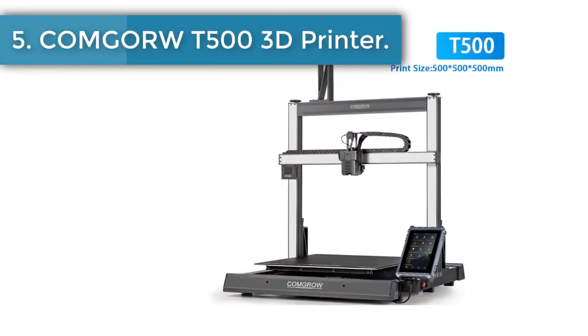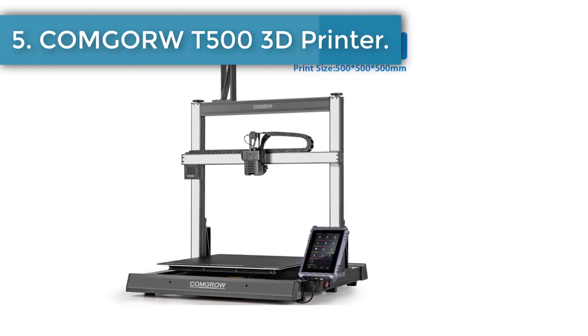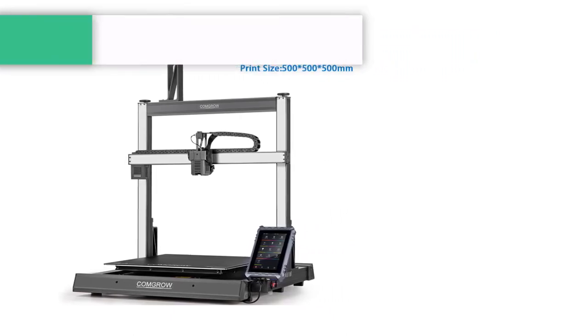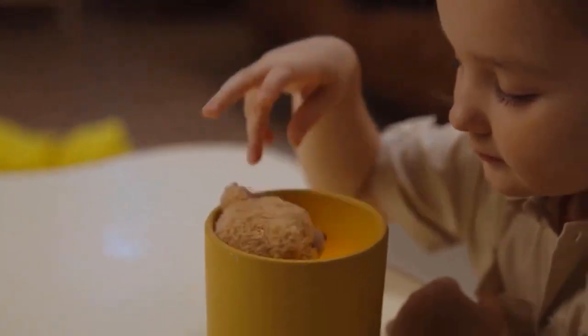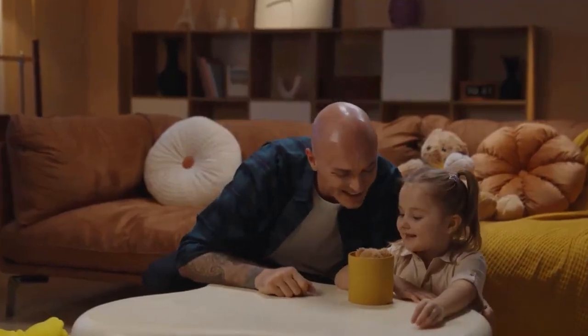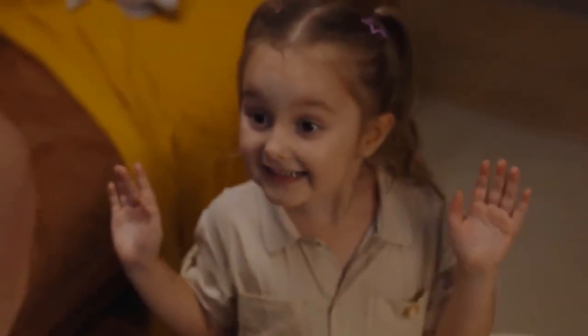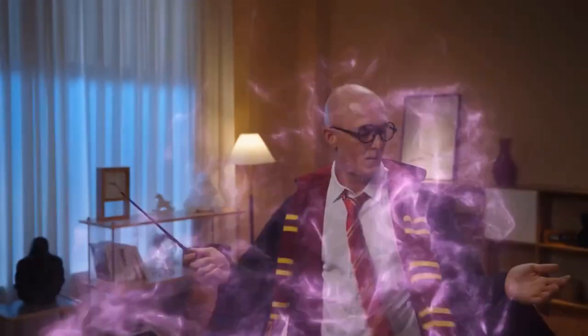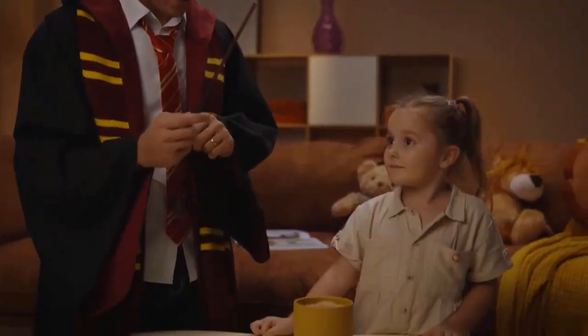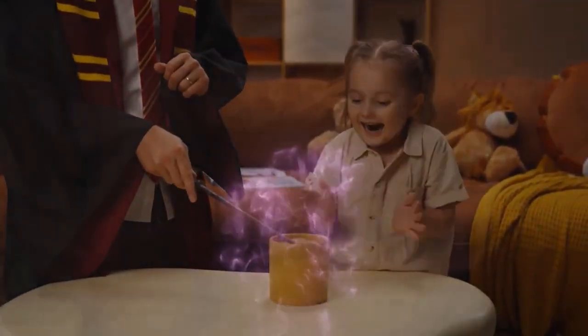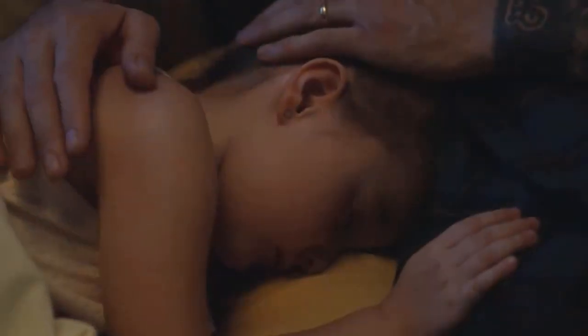Number 5. Comgrow T500 3D Printer. Comgrow T500 3D Printer supports 200 mm per second max speed, 8000 mm/s squared acceleration. The speed has been greatly improved while maintaining the printing quality, saving 73% of the time compared with other printers. You can complete models efficiently, saving time to wait for print jobs. Moreover, it can keep good printing quality at the same time.